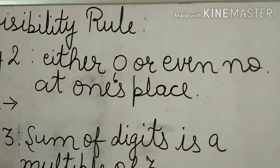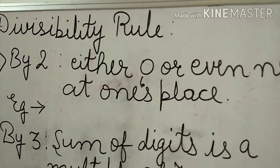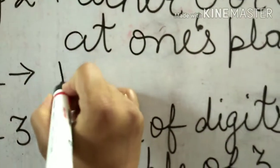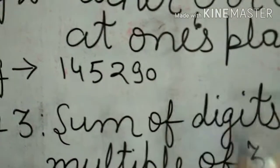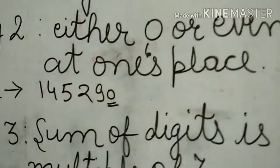Divisibility by 2: either zero or an even number at one's place. If any number, no matter how long, suppose 145290, has zero at one's place, then it is divisible by two for sure.